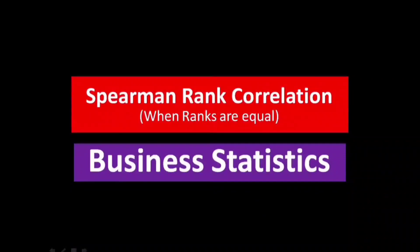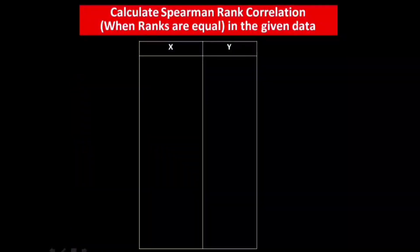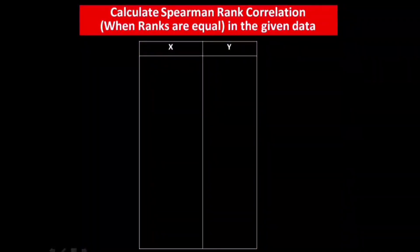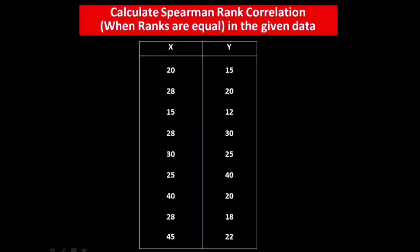The problem asks us to calculate the Spearman rank correlation. This is the given data — this is the case when the ranks are equal. The X values are: 20, 28, 15, 28, 30, 30, 25, 40, 20, 28, 18, 45. The Y values are: 15, 20, 12, 30, 25, 40, 20, 28, 22.